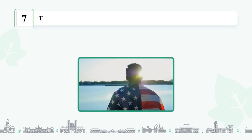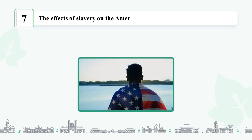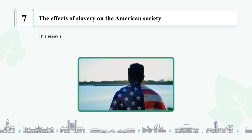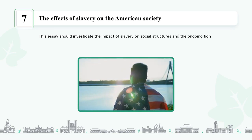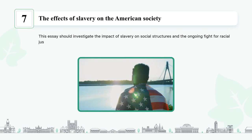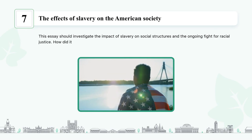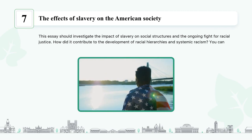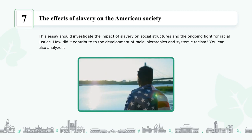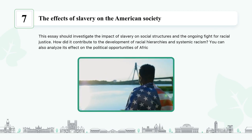The effects of slavery on American society: this essay should investigate the impact of slavery on social structures and the ongoing fight for racial justice. How did it contribute to the development of racial hierarchies and systemic racism? You can also analyze its effect on the political opportunities of African Americans.